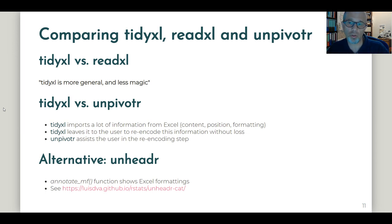To re-encode this information without losing any vital information. And unpivotr is the package that assists us in the re-encoding step.